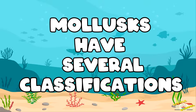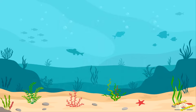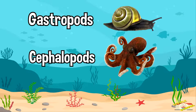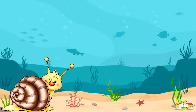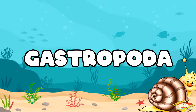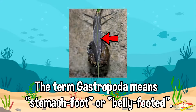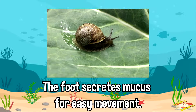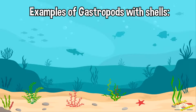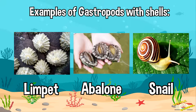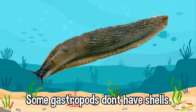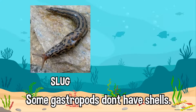Mollusks have several classifications. We will learn about these different types, starting with Gastropoda. The term gastropoda means 'stomach foot' or 'belly footed.' The foot of gastropods secretes mucus for movement lubrication. Examples of gastropods with shells include limpets, abalones, and snails. However, some gastropods have no shells — they include slugs and nudibranchs.